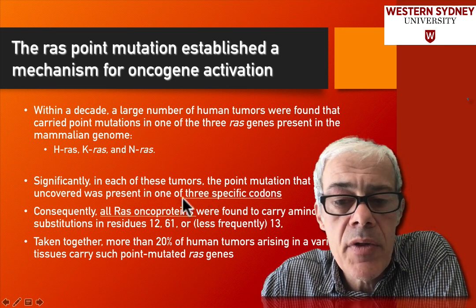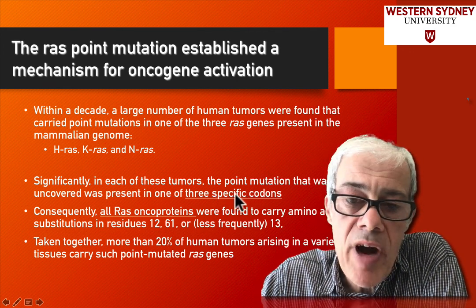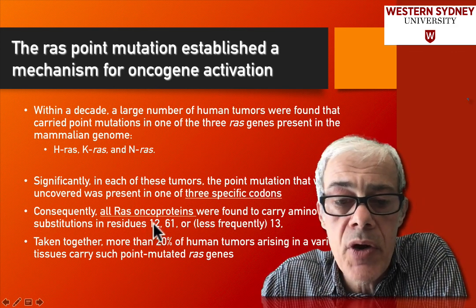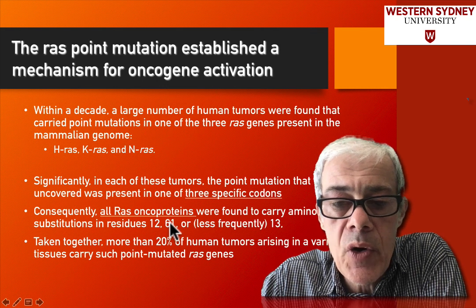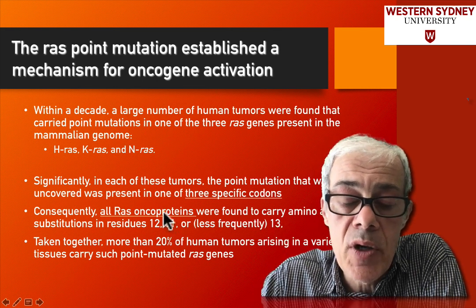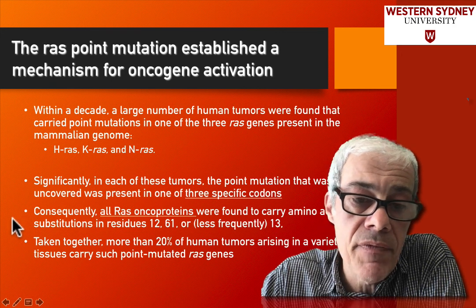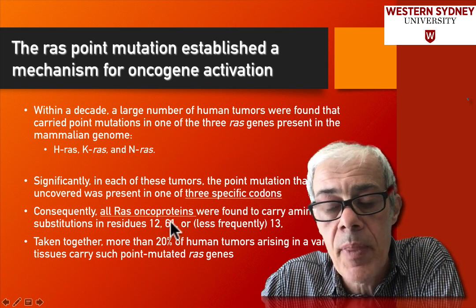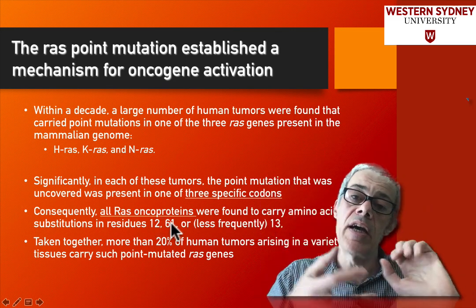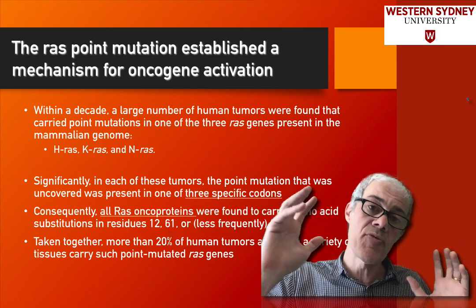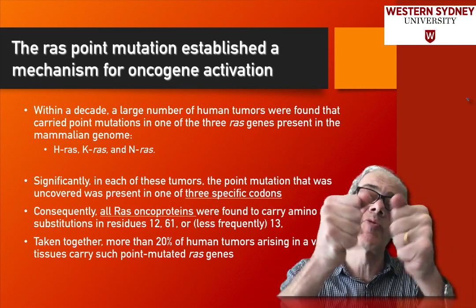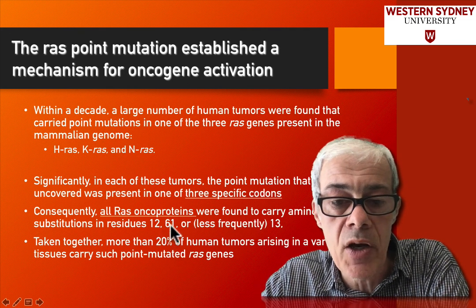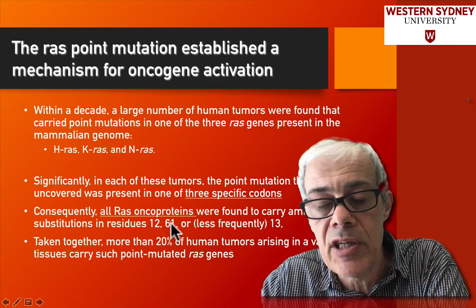It turns out there are three specific codons in RAS that are very important for controlling RAS function. We've talked about the mutation at the 12th codon. It turns out that the 61st codon, and sometimes the 13th codon, are also important. These codons are separated by many tens of residues on the primary sequence, but remember the protein folds around, and these residues come into close proximity in the folded structure.